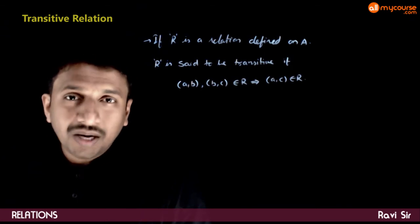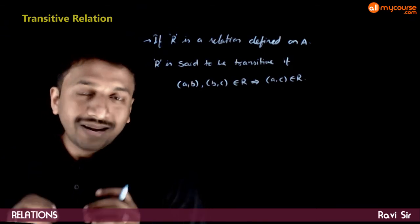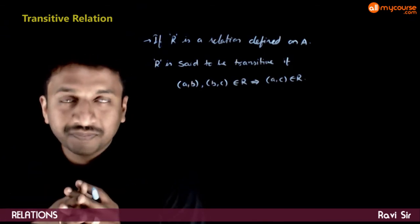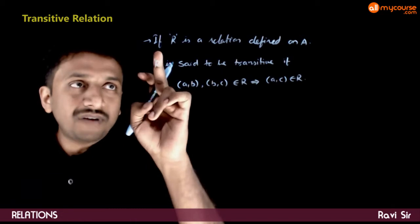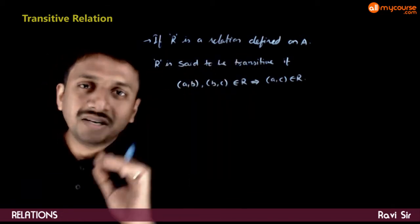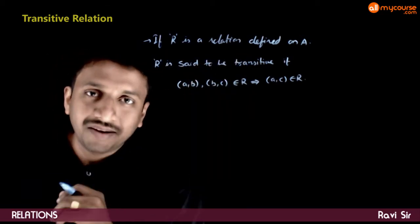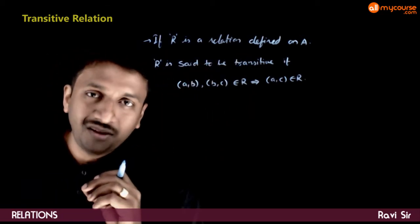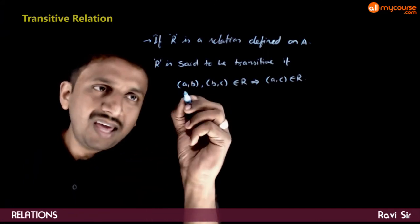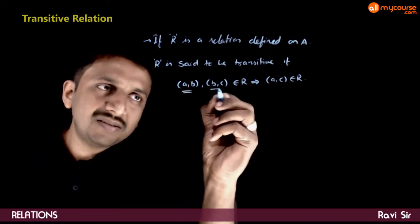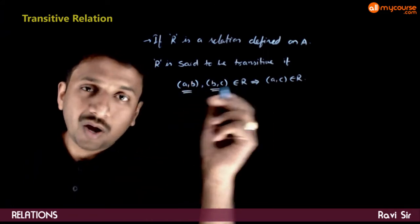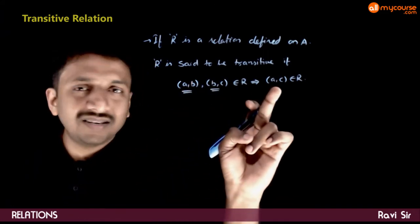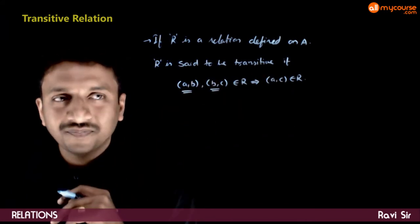In this video, let us look at what a transitive relation is. If R is a relation defined on A, R is said to be transitive if (A, B) and (B, C) belonging to R implies that (A, C) belongs to R.